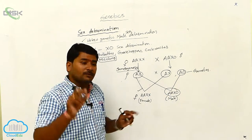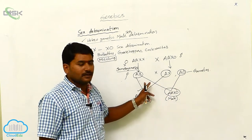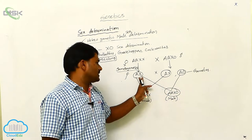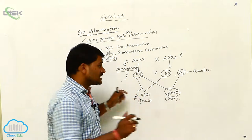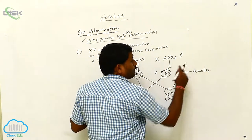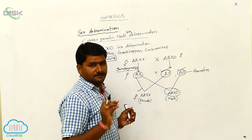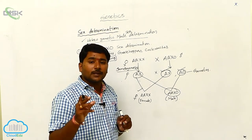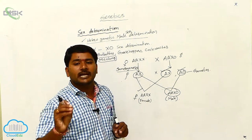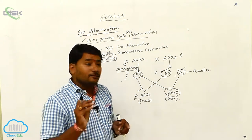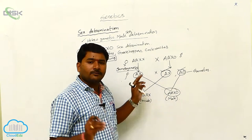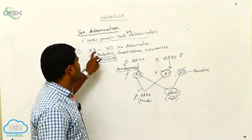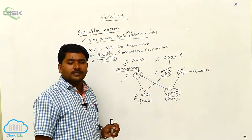The type of sperm will decide the sex. For example, this is fusing with this one — female — and this is fusing with this one — male. Sex is determined by the male individual's sperm. So males are determining the sex because they are producing two types of sperms. Which type of sperm mixes with the ovum will decide the sex of the individual. So this is the XX/XO type of sex determination.